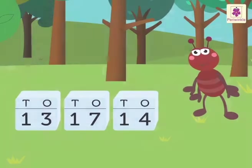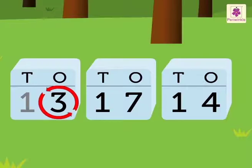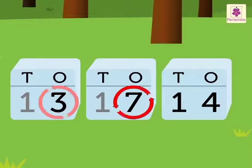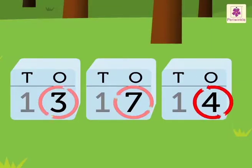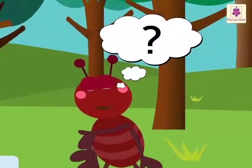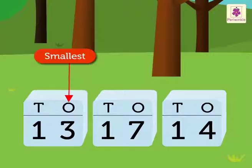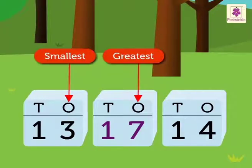Let's compare the ones as each number has 1 ten. Here, there is 3 ones in 13, 7 ones in 17 and 4 ones in 14. So, which is the smallest and the greatest here? The smallest is 3 ones in 13 and the greatest is 7 ones in 17.